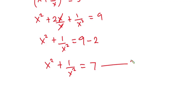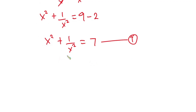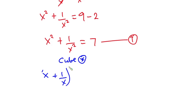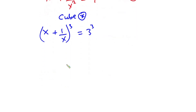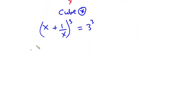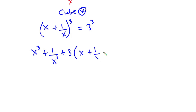I'll call this equation 1. Now the second thing I'm going to do is to cube equation star. So we have (x plus 1 over x) to the third power is equal to 3 to the third power. Expanding this, we have x cubed plus 1 over x cubed plus 3 times (x plus 1 over x), and this is equal to 27.